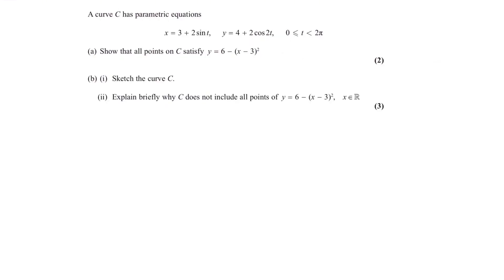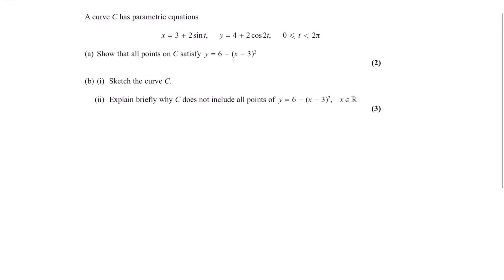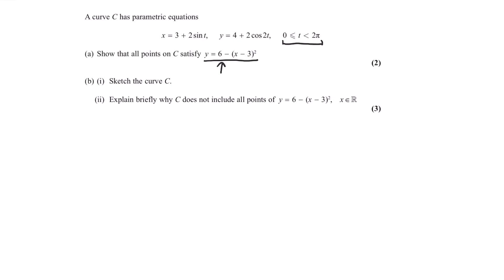In this next part of the question, we are asked to first sketch this curve C and then to explain why C does not include all of the points of this Cartesian equation. Now, where it's saying why it does not include all the points, it's actually giving us a clue as to how our sketch should be. This is where many people made a mistake in the exam — they drew the whole curve when you actually don't. The reason is because the parametric equation is dictated by the range of t values, and t goes from 0 to 2 pi.